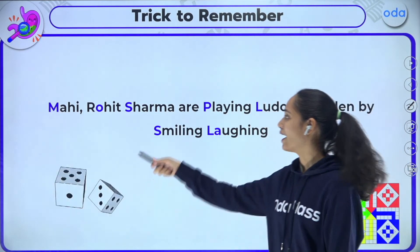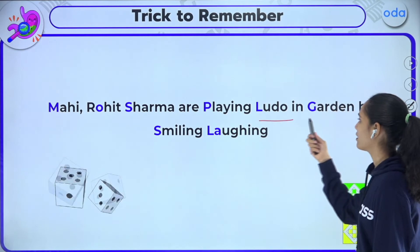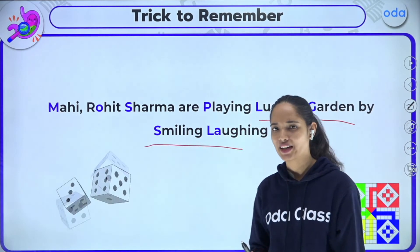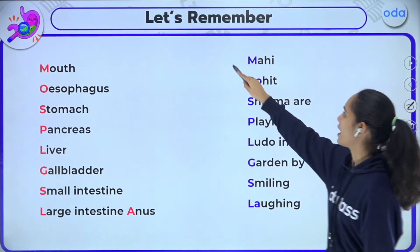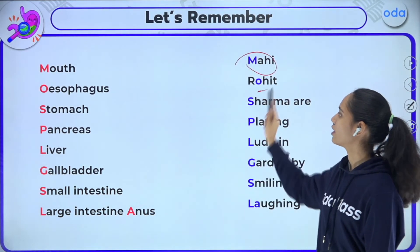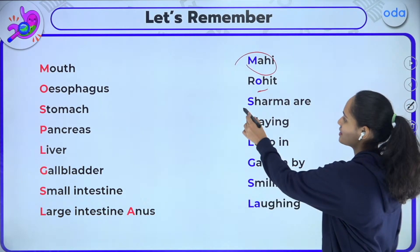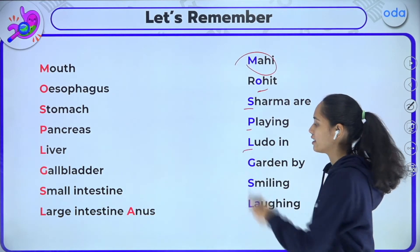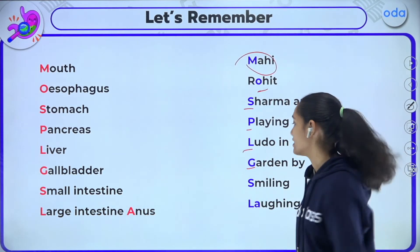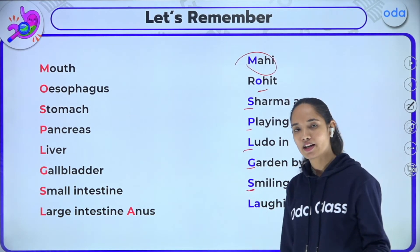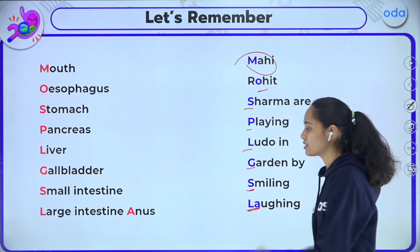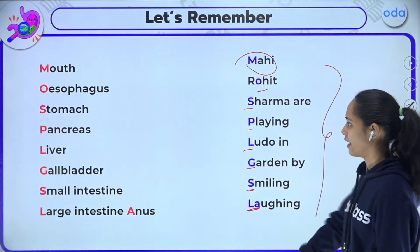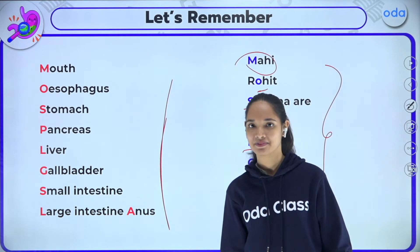The mnemonic trick is: 'Mahi, Rohit Sharma are playing Ludo in garden by smiling and laughing.' Mahi's M is for mouth, Rohit's O is for esophagus, Sharma's S is for stomach, Playing's P is for pancreas, Ludo's L is for liver, Garden's G is for gallbladder, Smiling's S is for small intestine, and Laughing's LA is for large intestine and anus. Just remember this mnemonic and you can recall all the organs very easily.